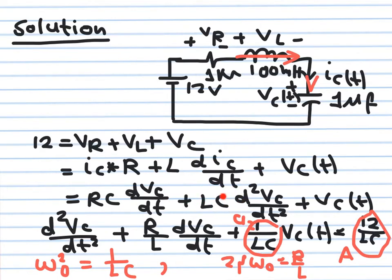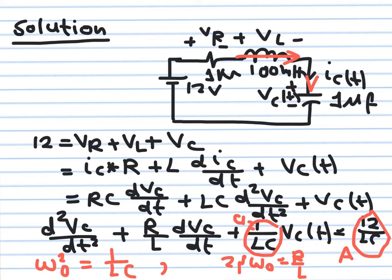We reorganize the equation into standard form by dividing both sides by LC, making the coefficient of the second order derivative equal to one — matching our standard form d²x/dt² + a₁ dx/dt + a₂ x = f(t). Dividing through by LC gives: d²v_C/dt² + (R/L)·dv_C/dt + (1/LC)·v_C = 12/LC. Here the coefficient of the second order term is one, and f(t) = 12/LC is a constant.